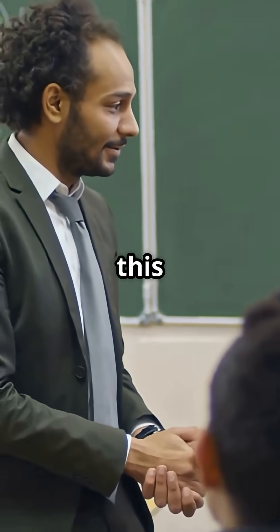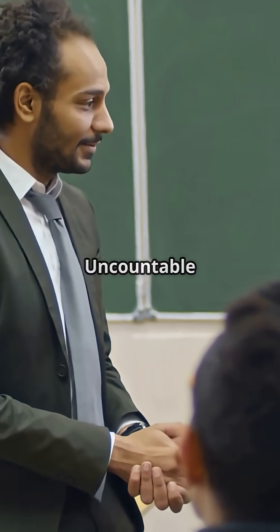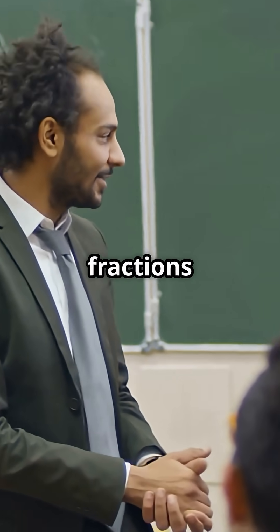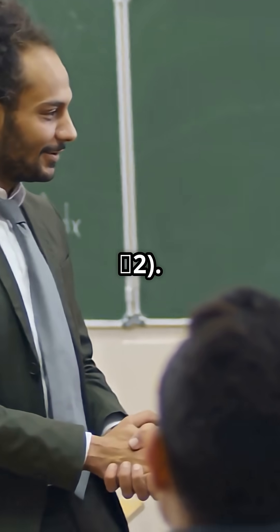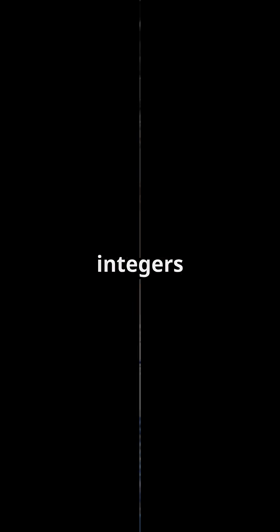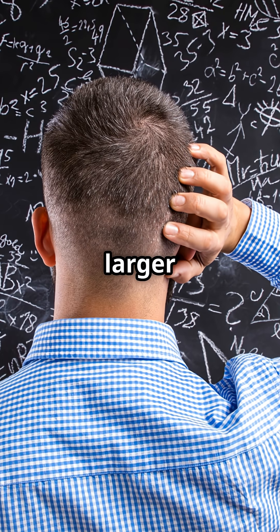Mathematician Georg Cantor called this aleph-0. Uncountable infinity is the infinity of real numbers, including all fractions and decimals like pi or the square root of 2. Between just 0 and 1, there are infinitely more real numbers than all the integers put together. This is a larger kind of infinity.